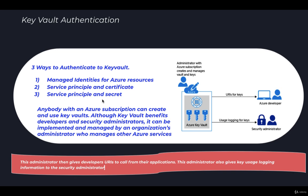The last method is service principal and secret. Again, a service principal and secret can be used to authenticate to Key Vault, but Microsoft doesn't recommend this approach either because it is very hard to automatically rotate the secrets.